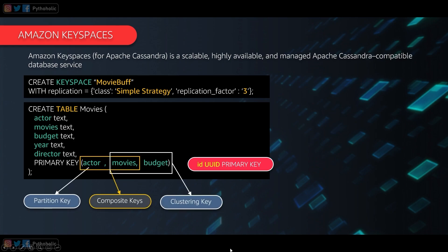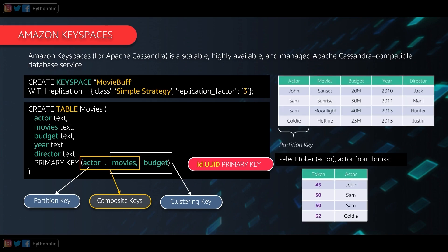Key concepts: the primary key indicates one or more columns used to retrieve data. A composite or compound primary key uses two or more columns — for example, actor and movies together. The first part of the composite key is the partition key, responsible for data distribution across nodes; the remaining parts are clustering keys used for sorting. For a simple single-column primary key, you can use a UUID to ensure uniqueness.